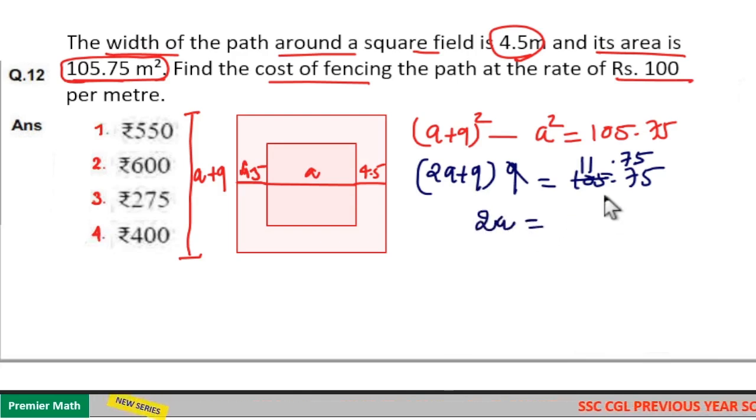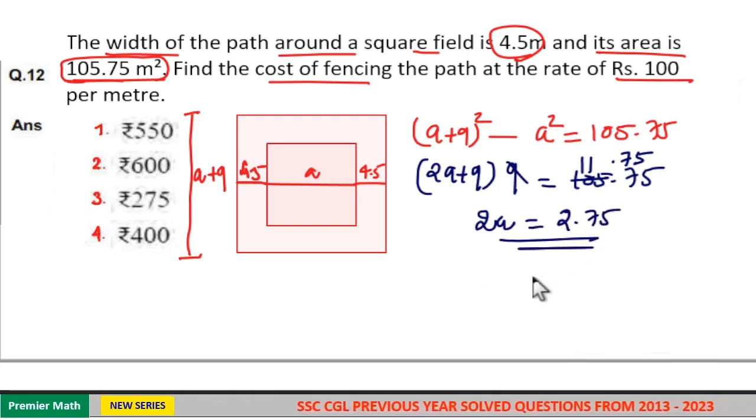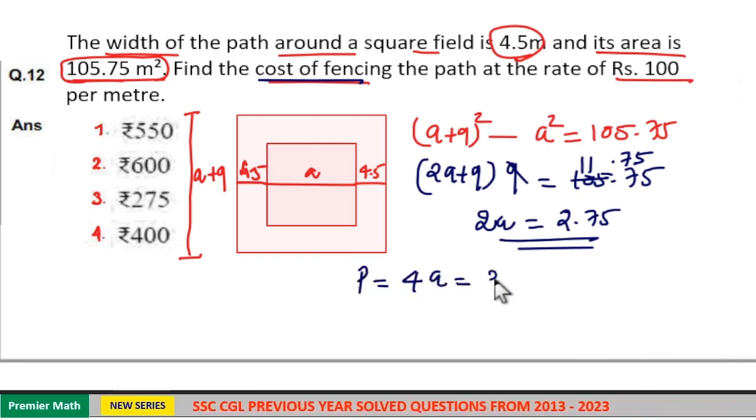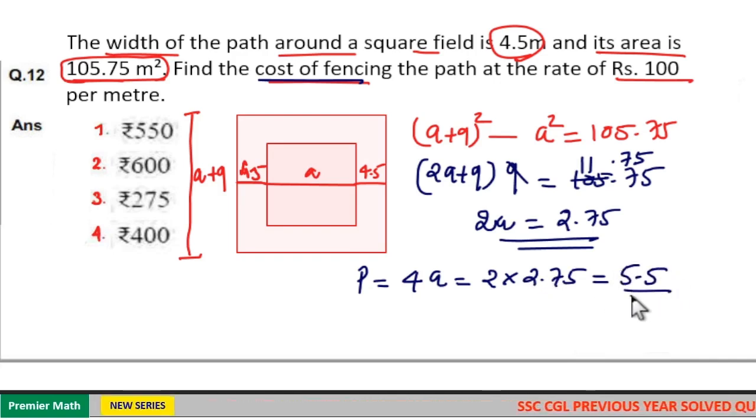If 2a is 2.75, here we need the cost of fencing. To find that, we need the perimeter of this ground. Perimeter is equal to 4a, which is equal to 2 into 2a, that is 2 into 2.75, which is equal to 5.5. So here perimeter is 5.5 meters, means here this is the path we have to fence.